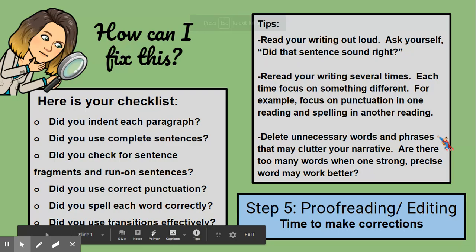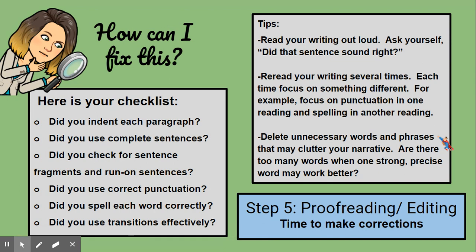Now it's time for step five, proofreading and editing — time to make corrections. Although you've been given peer feedback in step three, and some of your peers may have given you tips on how to improve your spelling, grammar, and punctuation, it's time for you to look at your essay and determine what needs to be corrected and what may have been overlooked.